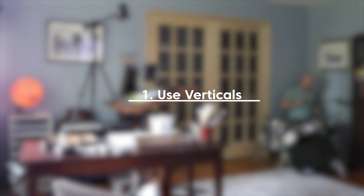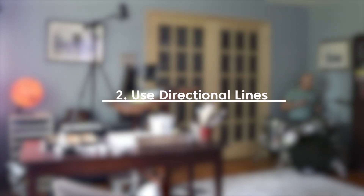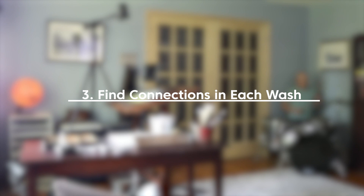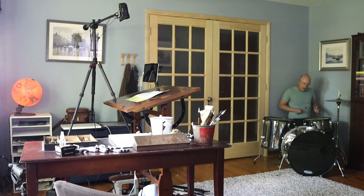Let's recap these three tips for creating a unified painting. Number one: use verticals throughout your scene to connect the foreground, middle ground, and background. Number two: use directional lines to guide the viewer into your scene and connect different areas. Number three, the most important: find connections within each wash — let colors flow together in your first wash, find a large connected middle value shape and paint it as one big shape instead of little separate pieces, and try to find connections when you paint your darks as well. Using these three tips, we can create more cohesive, unified paintings that feel more natural and are more compelling.